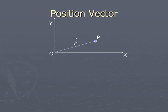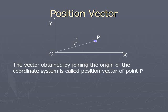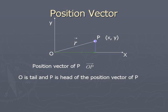Position vector. The vector obtained by joining the origin of the coordinate system to a point P is called its position vector. O to P is the position vector of P, where O is the tail and P is the head, and this can be represented in terms of unit vectors.